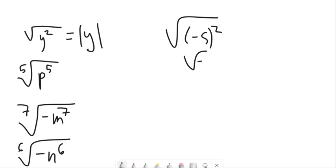square root of negative 5 squared, negative 5 squared is 25, it spits out 5. See how it spits out the positive version of it? So in this one, I'm going to say it's got to be that.